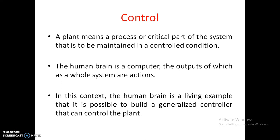Control means we need to control a plant. In general, a plant means it is a process or a critical part of the system where the monitoring or the maintenance of a control condition has to be implemented — we need to keep on maintaining it in a proper manner such that it will perform well. So the plant is a process or a critical part of the system where continuous monitoring or continuous controlled maintenance of the controlled condition is required.